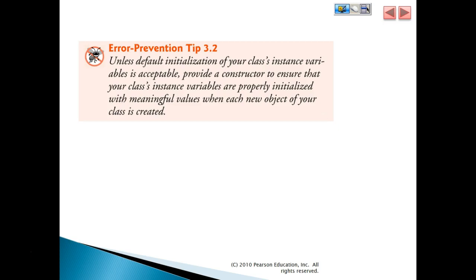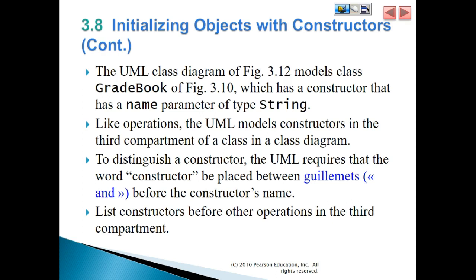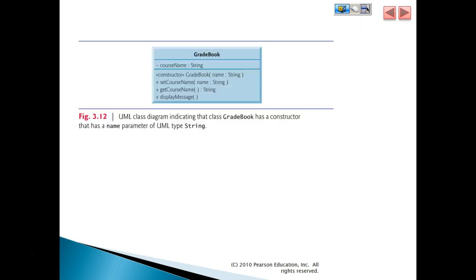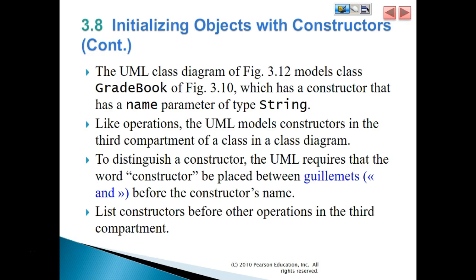For example, variables of integer type default to a value of zero. If you happen to be doing an operation where you're going to be doing division, and division by zero will generate a runtime error, you may want to do your own initialization to set it to some other value such as one. The UML class diagram models class GradeBook, which has a constructor with a name parameter of type String. Like operations, the UML models constructors in the third compartment of a class diagram. To distinguish a constructor, the UML requires that the word constructor be placed between guillemets before the constructor's name. List constructors before other operations in the third compartment.